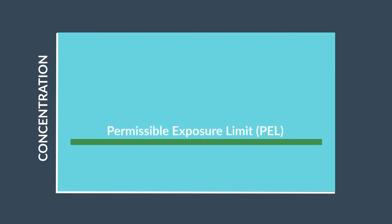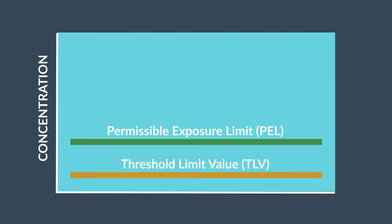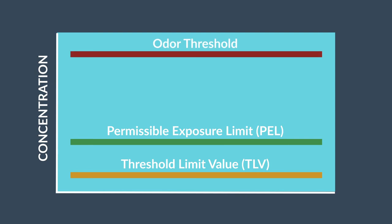In the U.S., air concentration limits must be below the Occupational Safety and Health Administration (OSHA) permissible exposure limits. The American Conference of Governmental Industrial Hygienists (ACGIH) also established threshold limit values for MDI, which are commonly referred to. The odor threshold, or point at which you can detect MDI with your sense of smell, is above the permissible exposure limit.